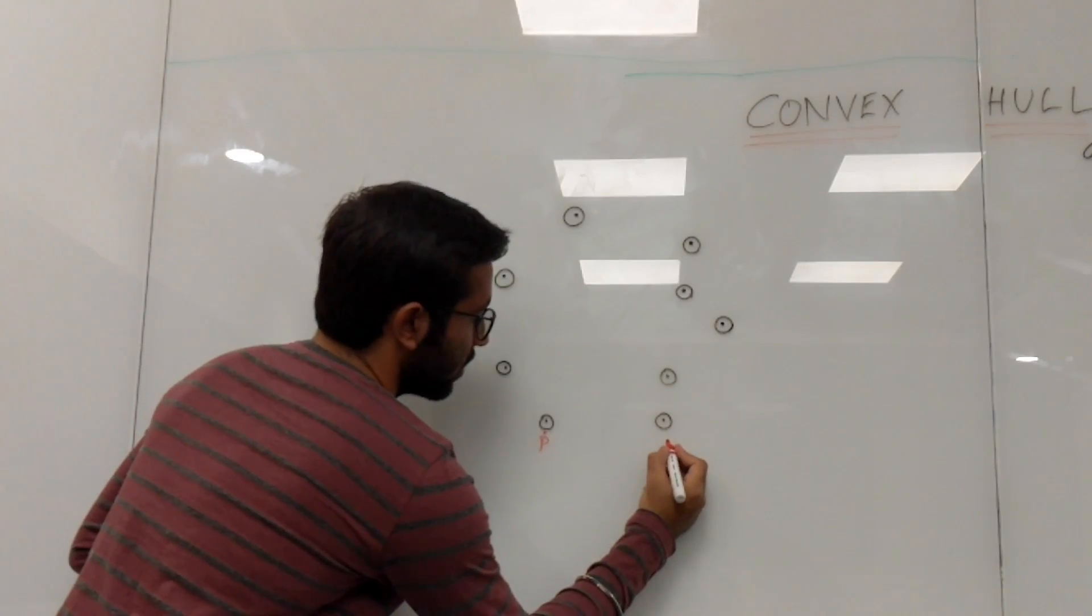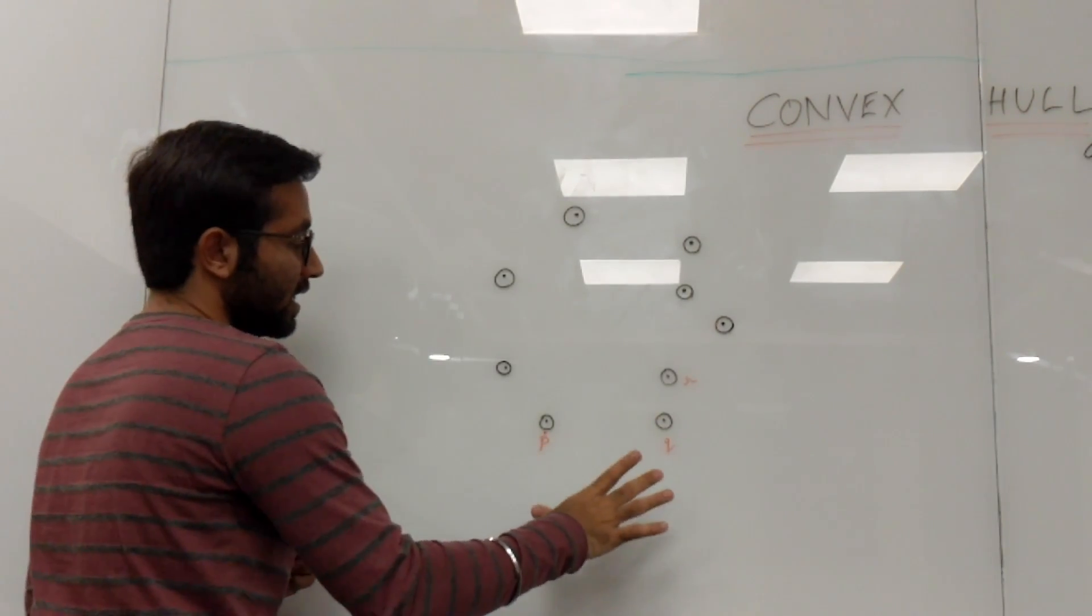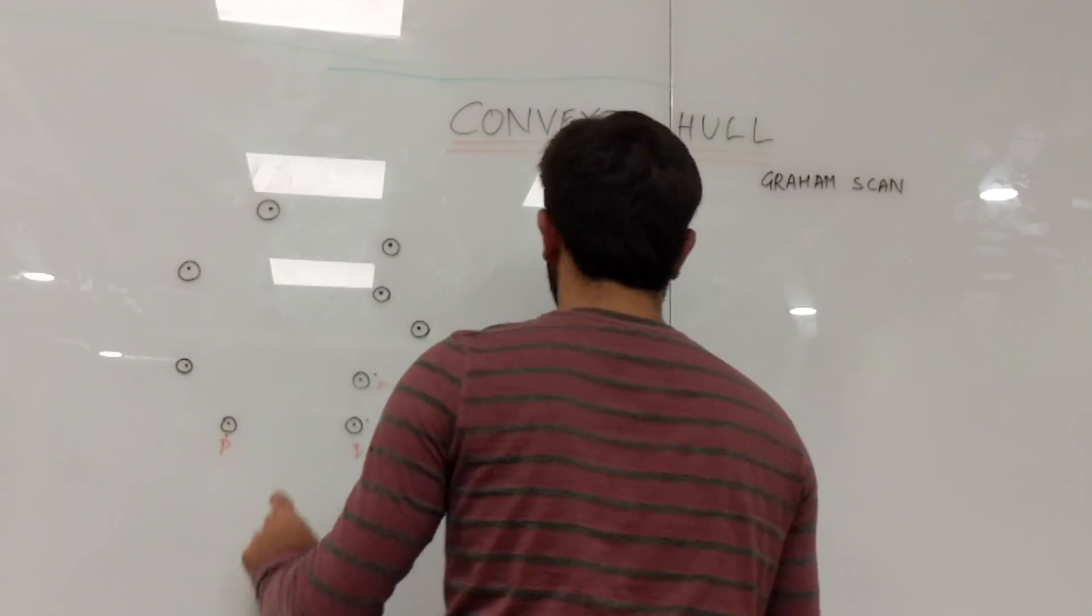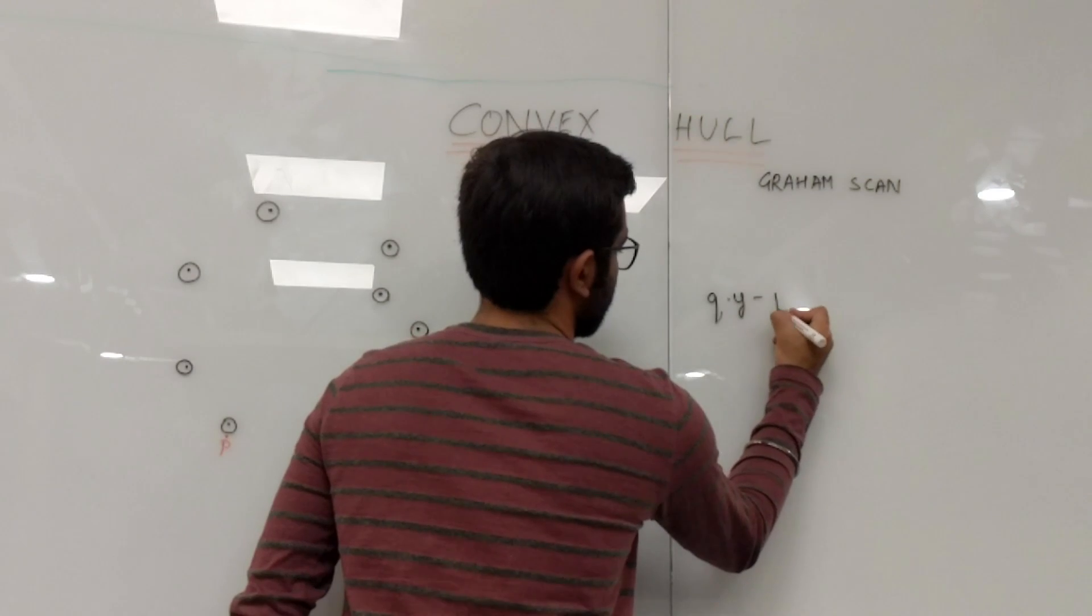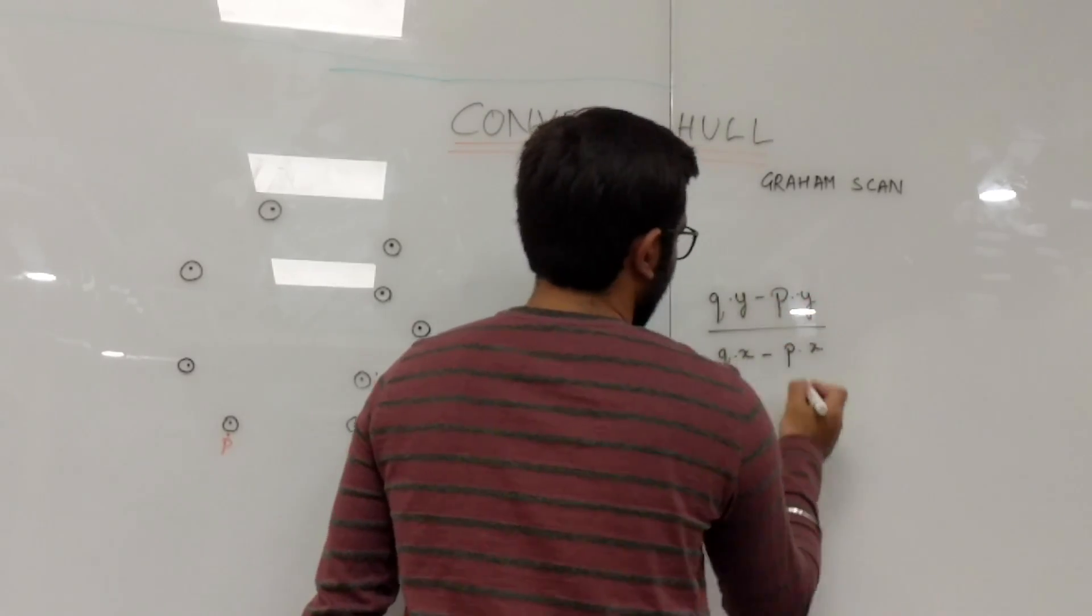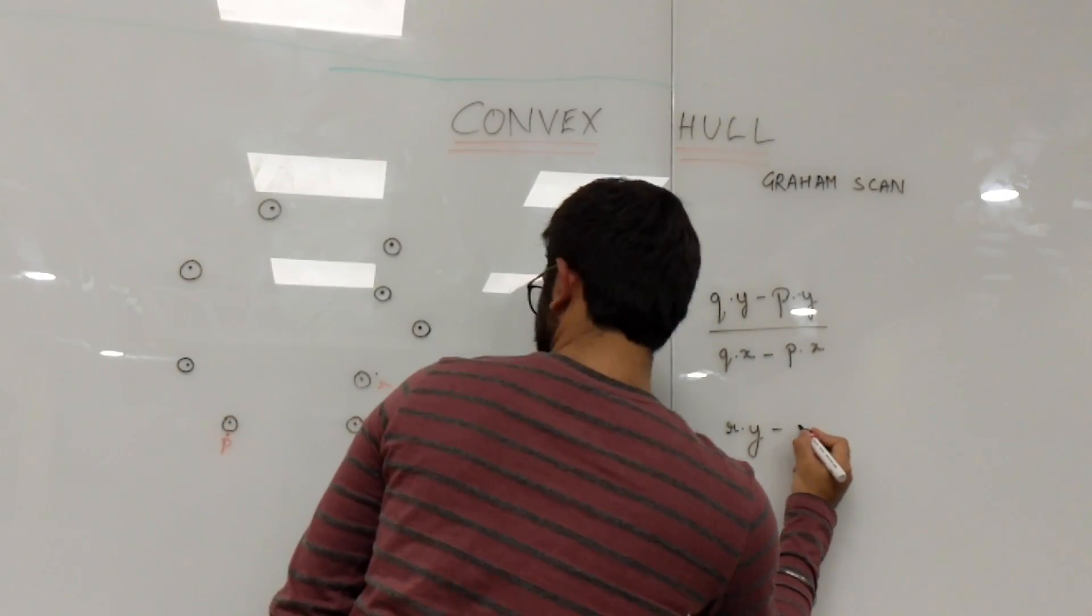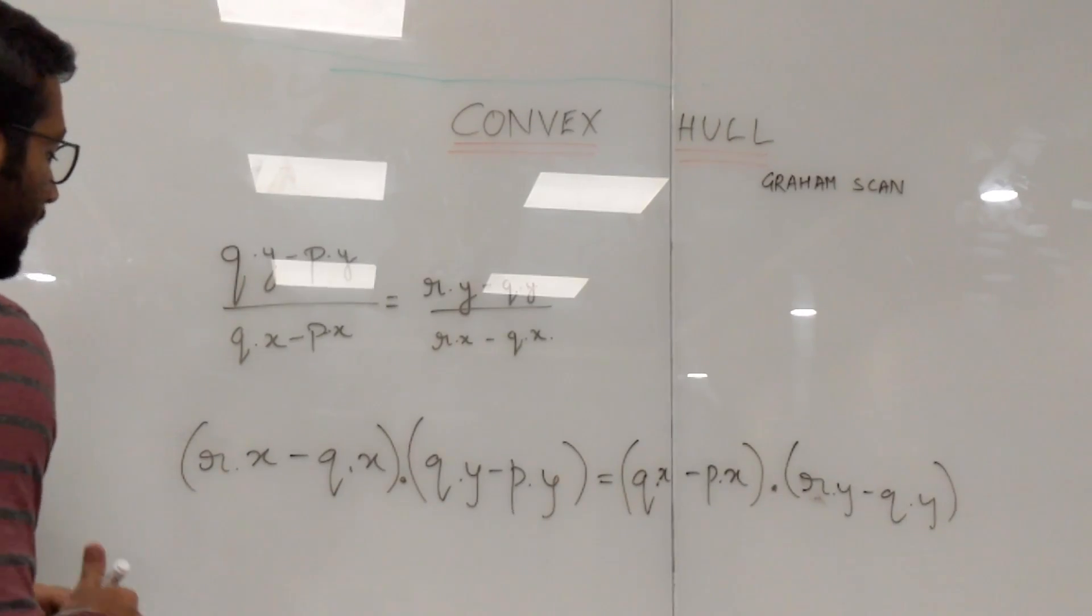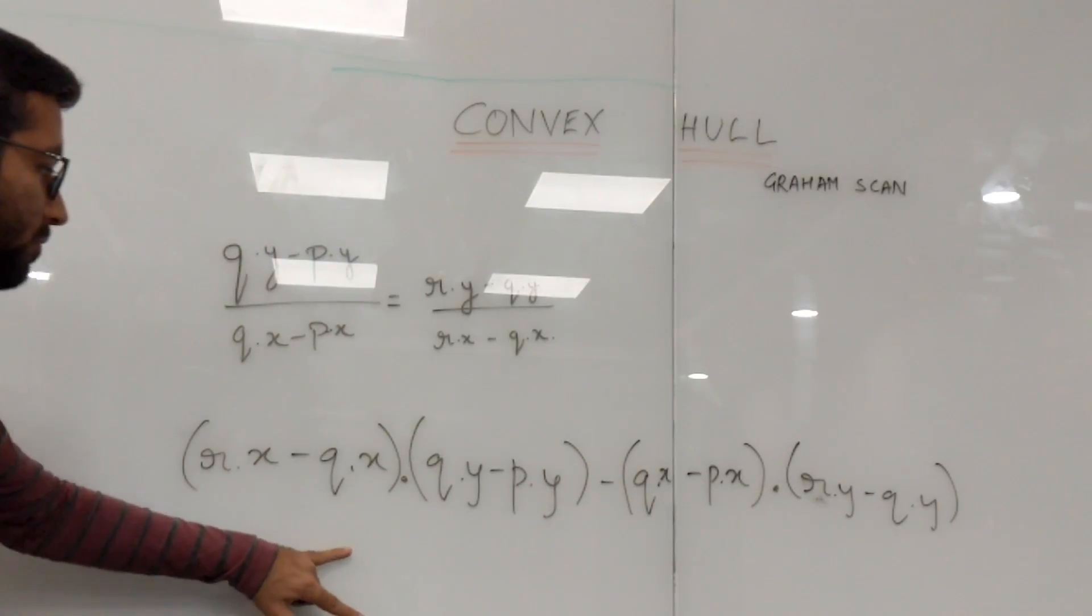So suppose this point is named as P, this is Q, and this is R. Now we need to find whether the angle which Q makes from P is less than that which is made by R. How we can do this is by using simple trigonometry of the slope of joining these two lines. The slope of this line will be (Q.Y - P.Y) / (Q.X - P.X), where X and Y are the corresponding x and y coordinates of the point. Now similarly for the line Q and R: (R.Y - Q.Y) / (R.X - Q.X). Now all we need to do is just compare these two lines, and by simple cross multiplication we can come to this equation.